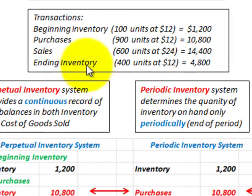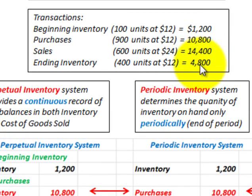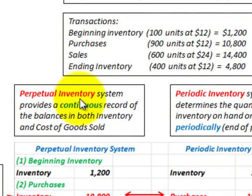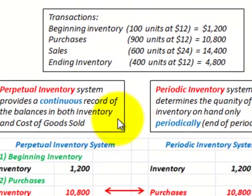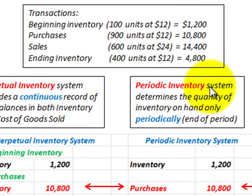For our example, we're going to have some transactions including beginning inventory, purchases for the period, sales for the period, and ending inventory. The perpetual inventory system provides a continuous record of the balances in both the inventory account and the cost of goods sold account. With a periodic inventory system, the quantity of inventory on hand is determined only periodically, at the end of a period.